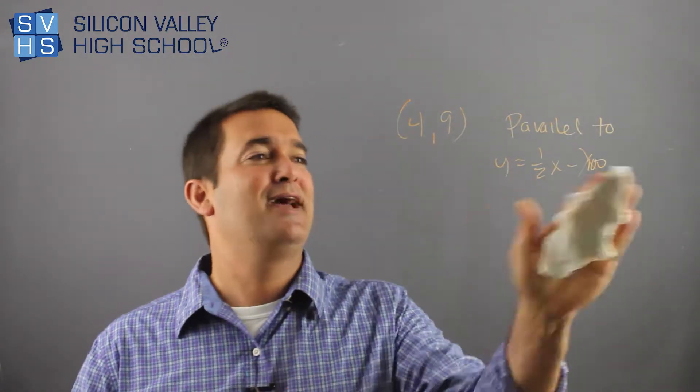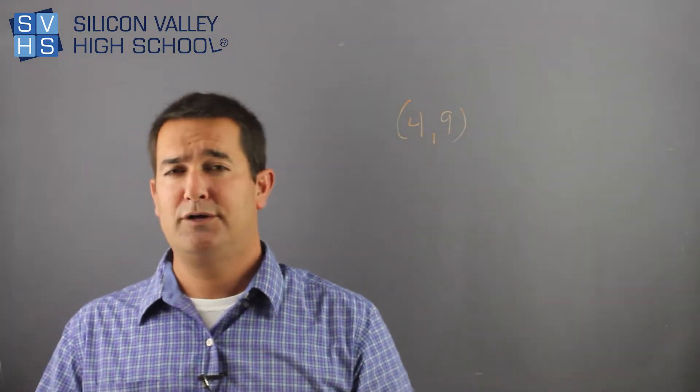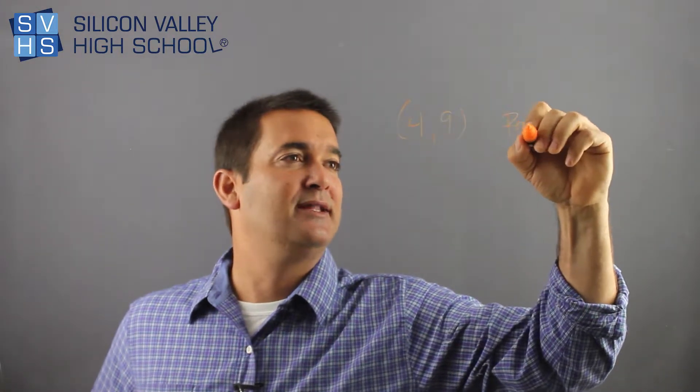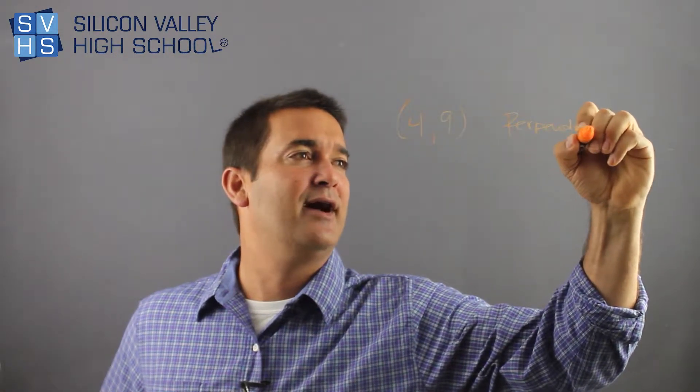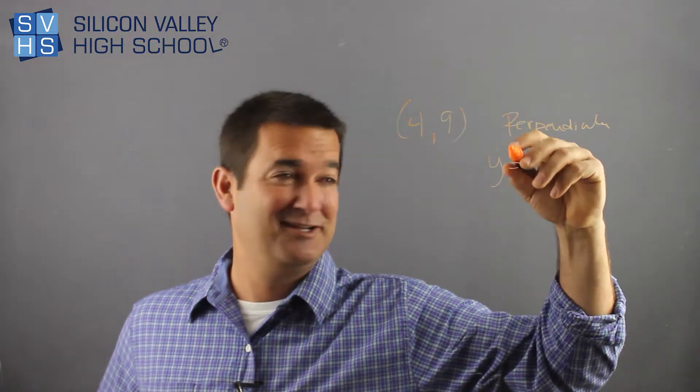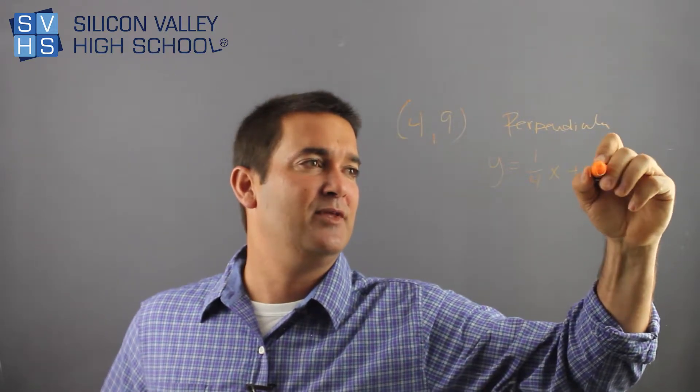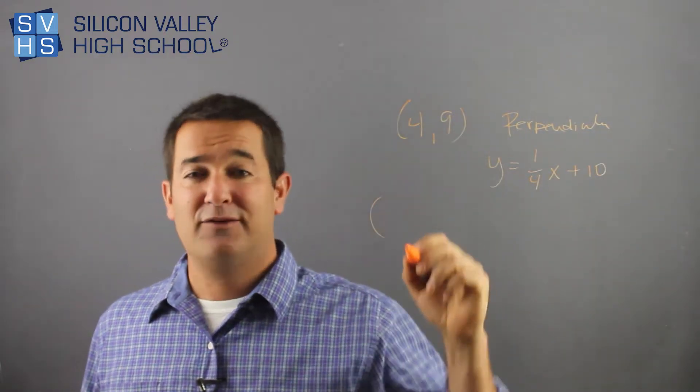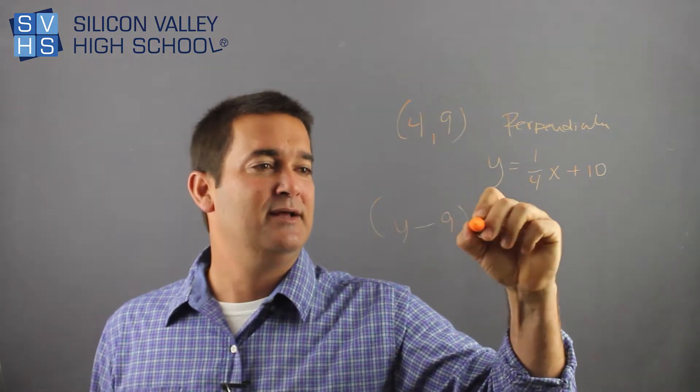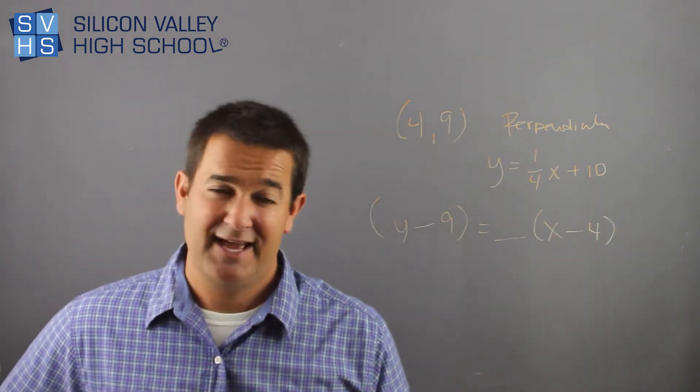Same thing if they say perpendicular to, so they'll be like, find the equation of a line in point-slope form that goes through this point but is perpendicular to this other guy. I'm just making these up on the spot. It's pretty witty of me. So then it'll be like Y equals one-fourth X plus 10. Again, I know my little formula, I learned it from Ryan: Y minus my Y value equals slope times X minus my X value. But what's my slope in this case?